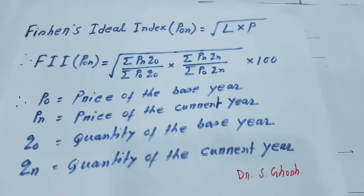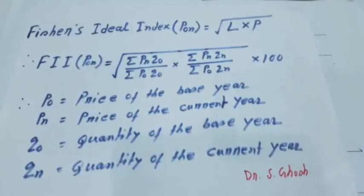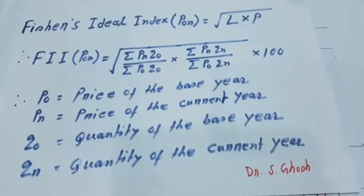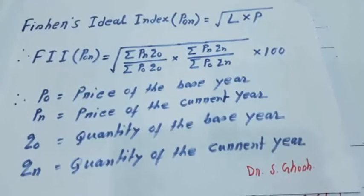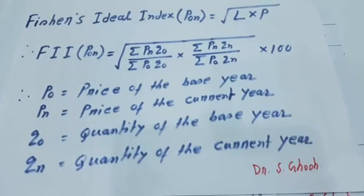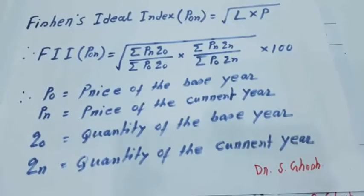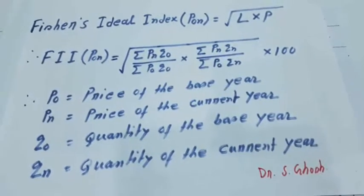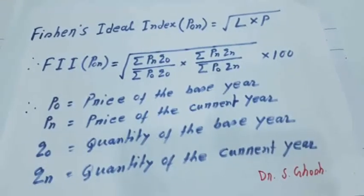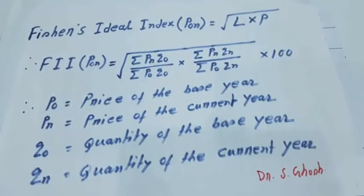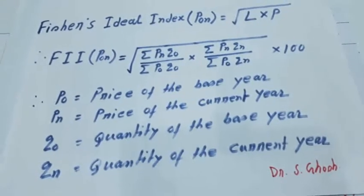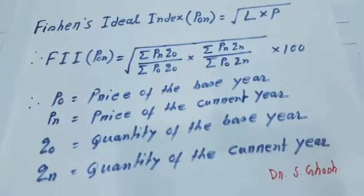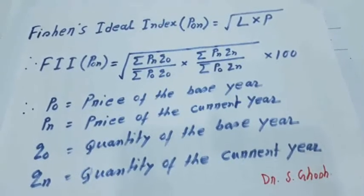Hello students, this is Shubhra Daghosh. Now we will be learning how Fisher's ideal index is computed. It is one of the important measures of weighted aggregative index. This measure was suggested by one great American economist named Irving Fisher. After his name, this index is known as Fisher's ideal index.